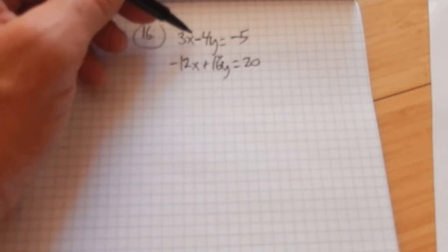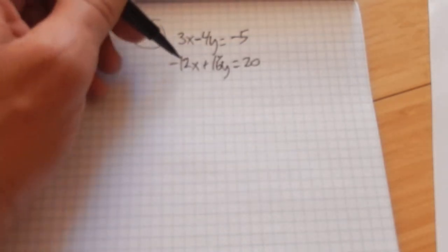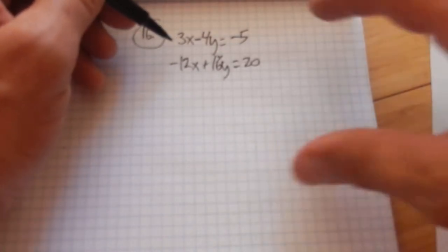So I have a 3x and a negative 12x. I have a negative 4x and a 16. I think I'll try and cancel out the x's, and I'm going to use elimination.